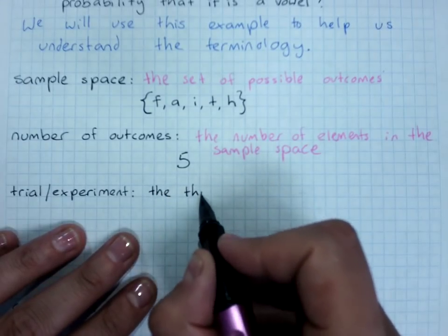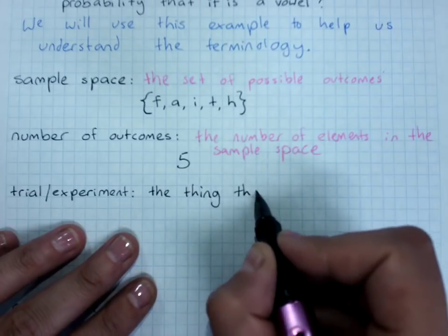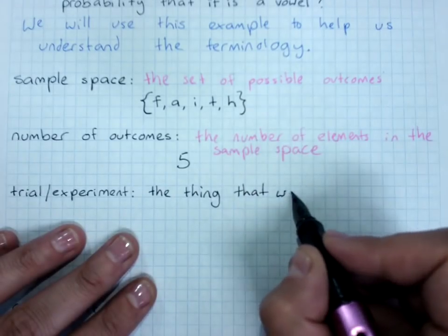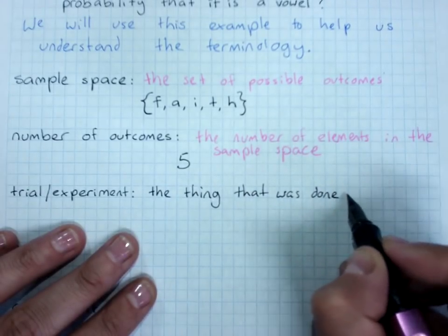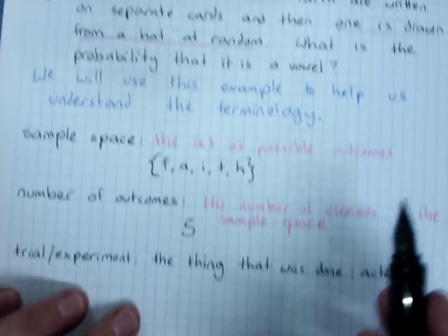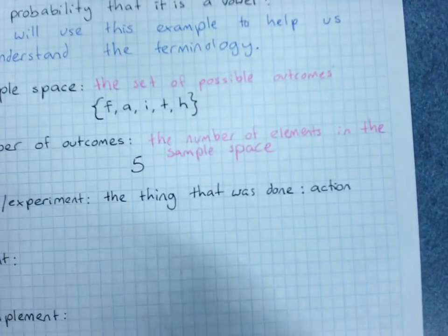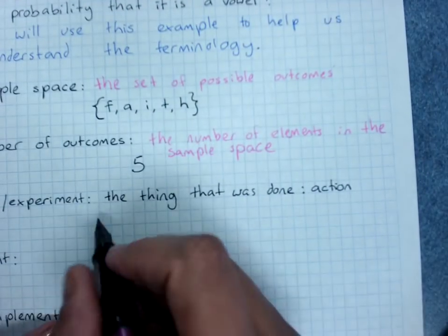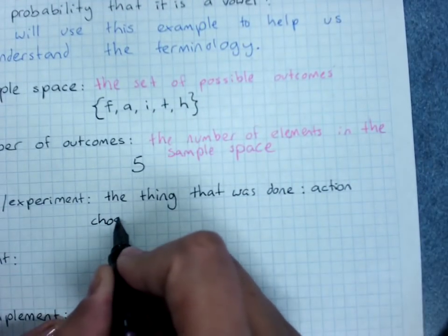So this trial or experiment here is the thing that was done, the action. So here that is choosing a card at random.